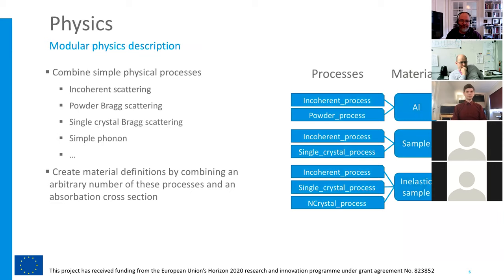So I rethought how sample description should be according to me, and I wanted that to be as modular as possible. First, the physics should be modular because you want to keep that simple. So instead of just having one component that does both incoherent and powder, we just have process components. These are, for example, just incoherent scattering, just powder scattering, or just single crystal, maybe phonon or something else. And then you can combine as many of these as you want into a material definition.